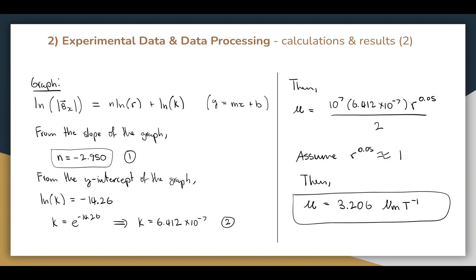Specifically, n is the slope of the graph and ln(K) is its y-intercept. I got negative 2.95 for n and k's value is shown on the left. Using these numbers, I solved for mu and got 3.206 newton meters per tesla.